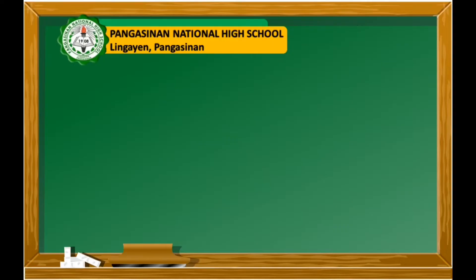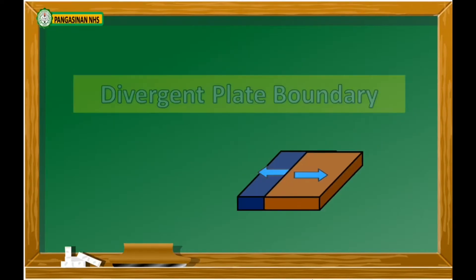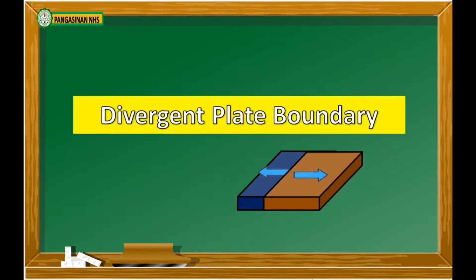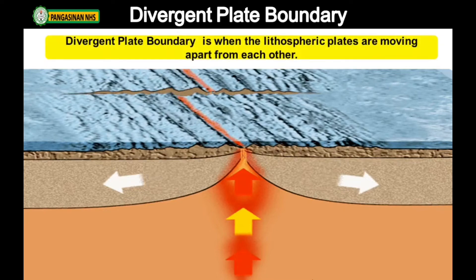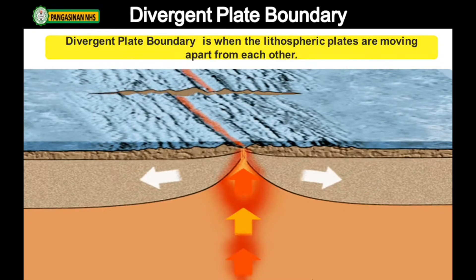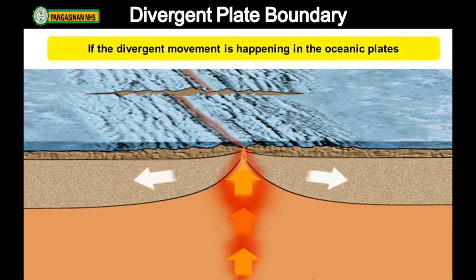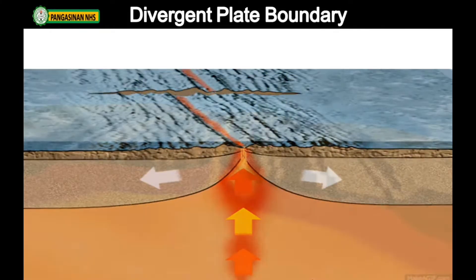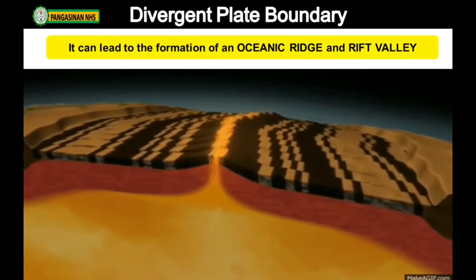Let's continue our video lesson on the processes that occur along plate boundaries, part 2. Divergent plate boundary is when the lithospheric plates are moving apart from each other. If the divergent movement is happening in the oceanic plates, it can lead to the formation of the oceanic ridge and rift valley.